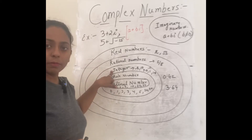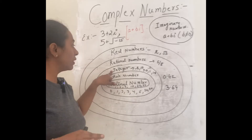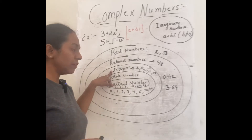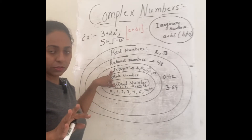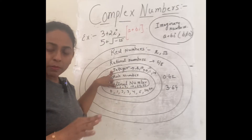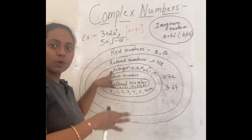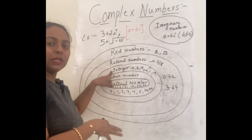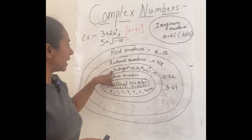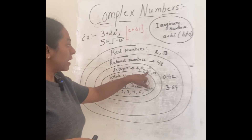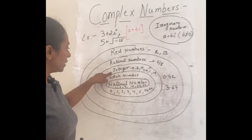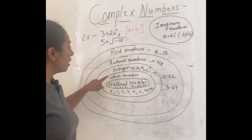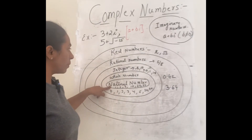If you are talking about integers, integers include negative numbers but no fractions. So all negative numbers like minus 1, minus 20, minus 8, plus zero, 1, 2 — integers include all whole numbers and natural numbers as well.